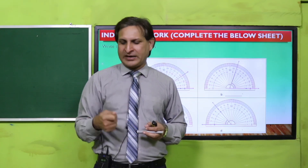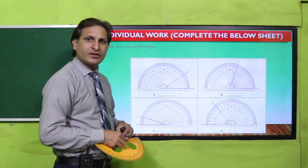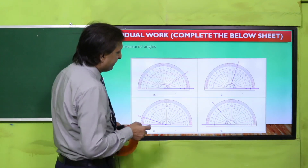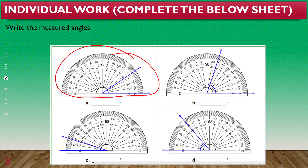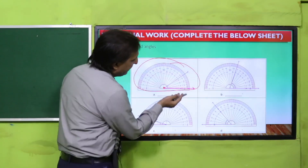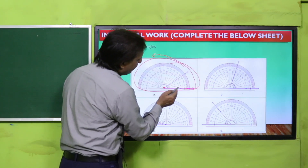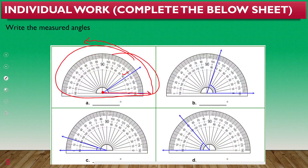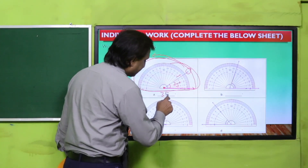Yeh kuch examples hain, worksheet hai jo ke aapne solve karni hai khud aur apni teacher ko baad mein submit karwani hai. Methodology: given angles ko aapne measure karna hai. Dekhein — yeh jo protractor hai, picture mein bhi show karwaya hua hai. Aap dekhein ki iska jo midpoint hai, baseline ka protractor ki, woh angle ke vertex ke upar hai. Yahan se hum log lower scale ko read kar rahe hain — lower scale mein jo arm hai angle ki woh 35 pe aati hai. So, is angle ki value 35 degree likhenge.